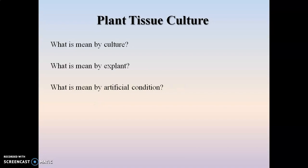What is meant by artificial conditions? While growing the explant in plant tissue culture, some artificial conditions are required to be maintained as it is grown in vitro. These include temperature, humidity, light intensity, and air — all maintained in a controlled environment.